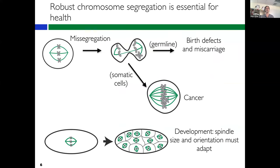My group is very interested in chromosome segregation, both from a biophysical perspective as a fascinating cellular machine, and because it's very important for cell health. Missegregation in the germline can lead to birth defects and miscarriage, and in somatic cells it is associated with cancer. During development, spindle size and orientation are also very important. So this cellular machine has a very important role to play in human health.